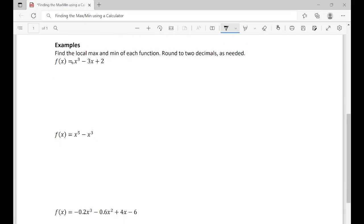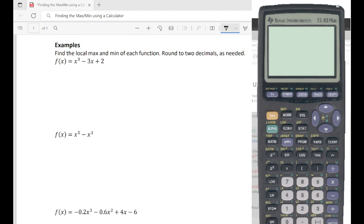So we're going to find the local max and min of each function and we're going to round to two decimal places as needed. So the first one we have is x cubed minus 3x plus 2. So we're going to use our calculator to find the max and the min. So here's our calculator.